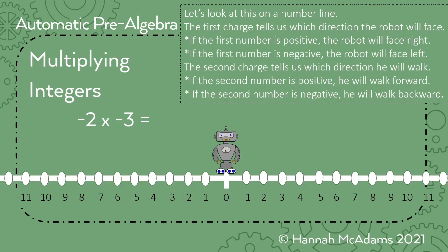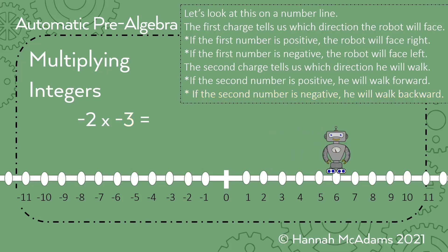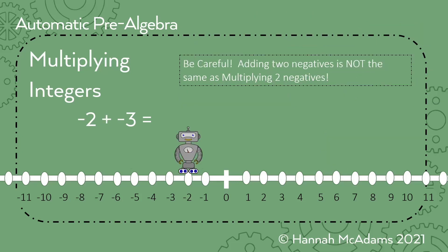Now I do want to show you this: negative two times negative three is positive six — not negative six — because he's facing toward the negative numbers but walking backwards. Be careful, because this is where I see students get confused: it is not the same as addition. Adding two negatives is not the same as multiplying two negatives. When he started at negative two and went to the left three spaces, the answer is negative five. So when we multiplied, negative two times negative three gave us positive six, but when we added two negatives, we get a negative number.